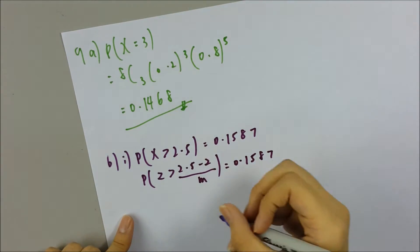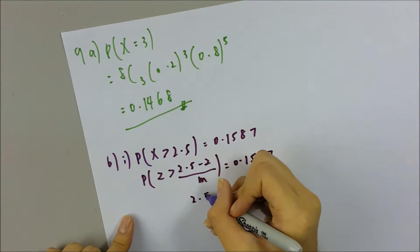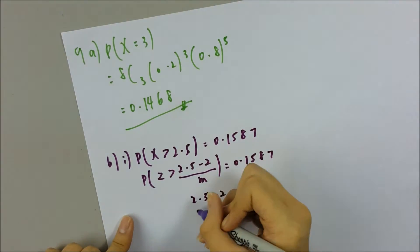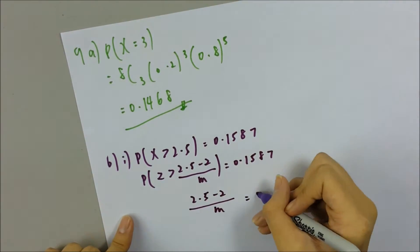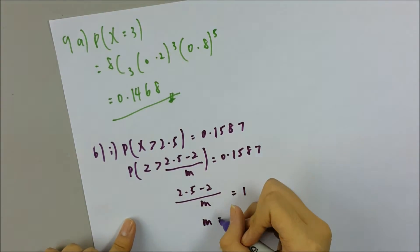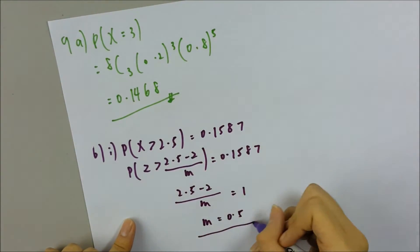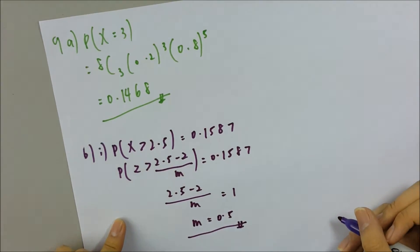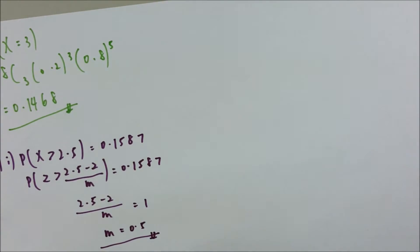So (2.5 - 2) / M equals 1, and you press your calculator. You can get that M equals 0.5. So this is your answer for B(i). Now we go to the last part, B(ii).